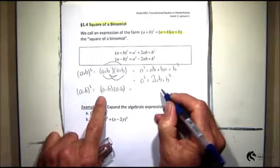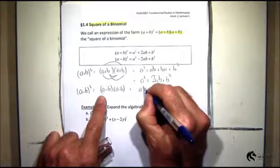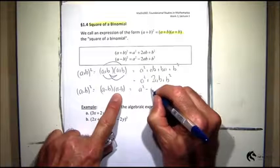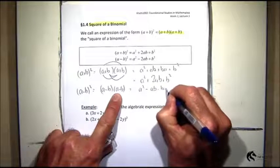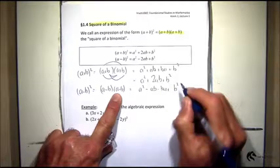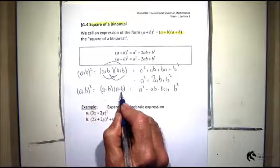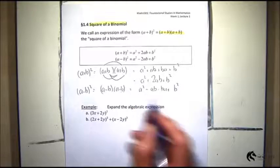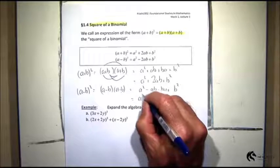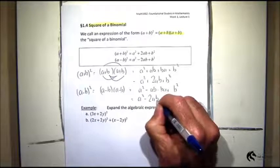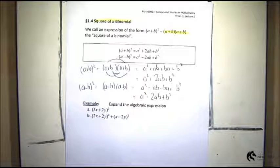And again if I do the FOIL on that I will get a² - ab - ba + b², because minus b times minus b is plus b². And so that becomes a² - 2ab + b².